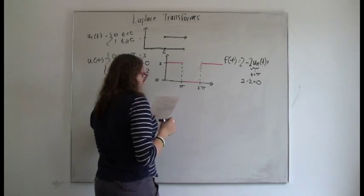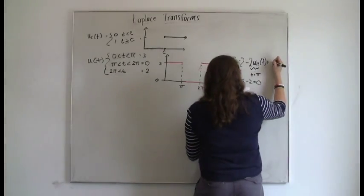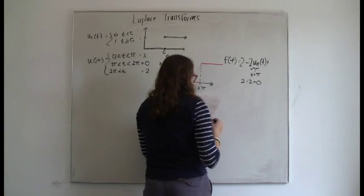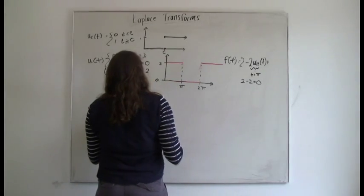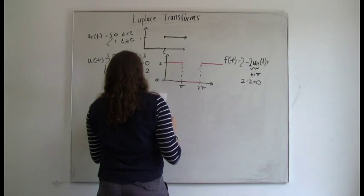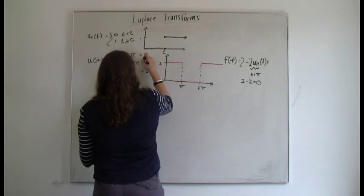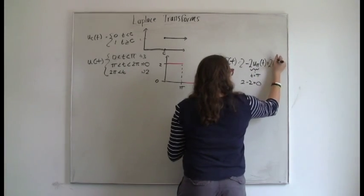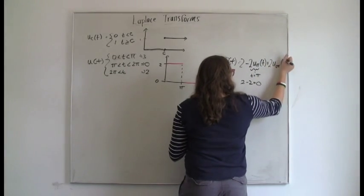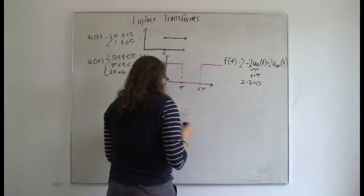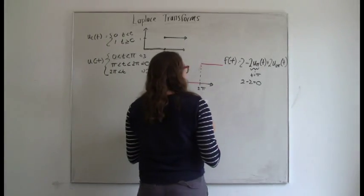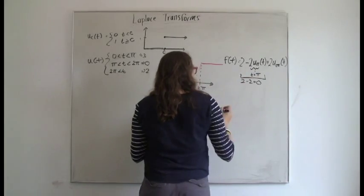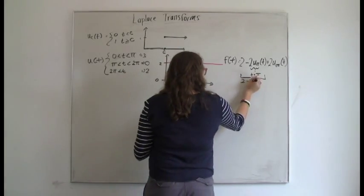So then, to get it to jump back up again, we would use this unit step function of 2 pi of t. But this, once again, would bring it only back up to 1, because that's the job of the unit step function. So we need to multiply it by 2 to get it to go back up to 2. So the total function is 2 minus 2 times the unit step value of pi of t, plus 2 times the unit step function of 2 pi of t.